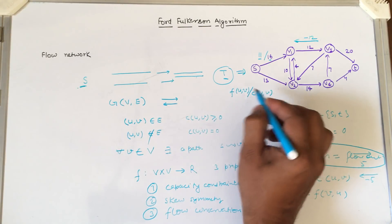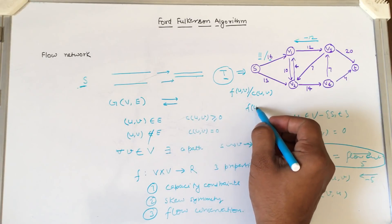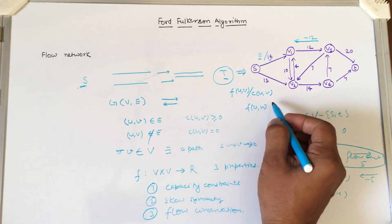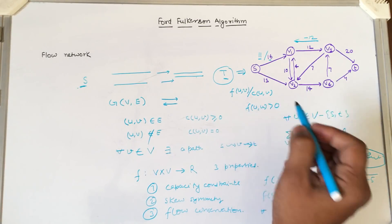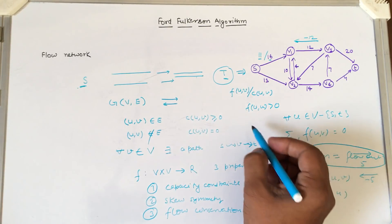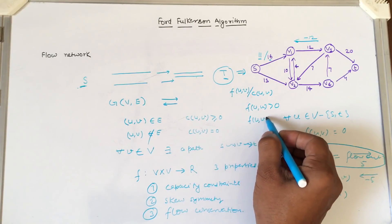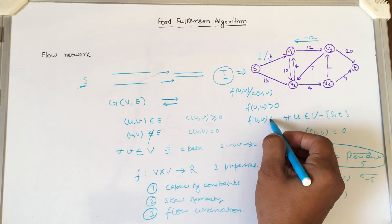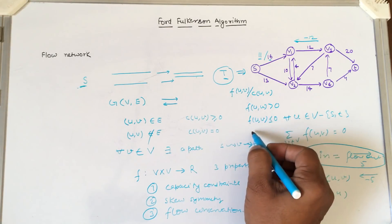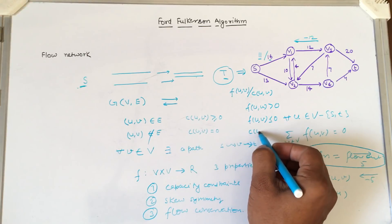If we have a flow from U to V greater than 0, we represent it as flow slash capacity. If the flow from U to V is less than or equal to 0, we represent only the capacity.